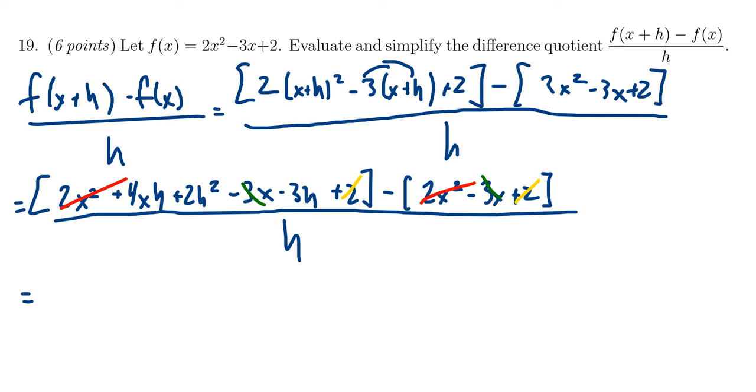And so in the numerator what's left behind is 4xh plus 2h squared minus 3h all above h. You'll notice that everything in the numerator is now divisible by h. Let's factor it out. That leaves behind 4x plus 2h minus 3. And this all sits above h now.